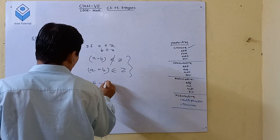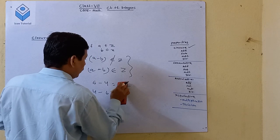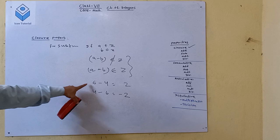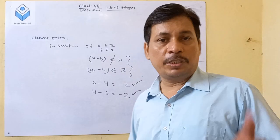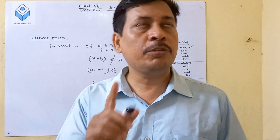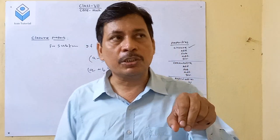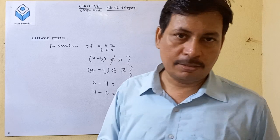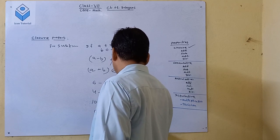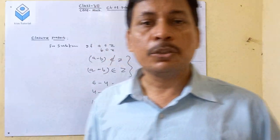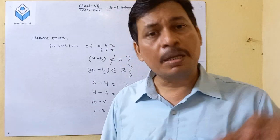For example, 6 minus 4 equals 2, and 2 is also an integer. So the subtraction of two integers is also an integer. If you subtract any two integers, the result will also be an integer. For example, 5 minus 2 equals 3, which is an integer. It may be positive or negative, but the result must be an integer. So if A is an integer and B is an integer, then A minus B is also an integer.